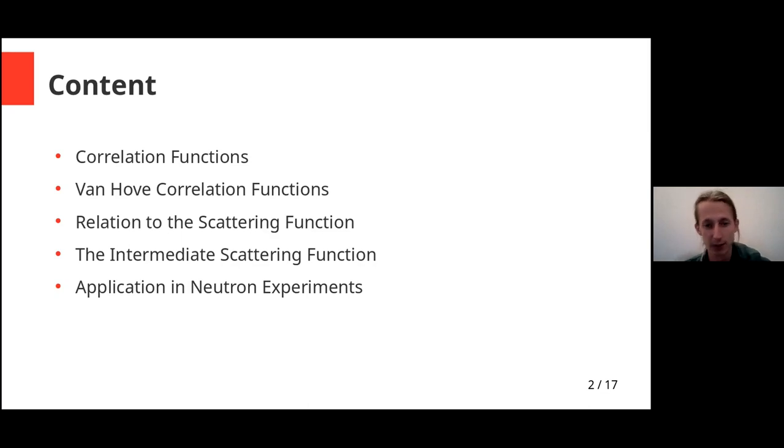Then how this relates to scattering functions. There we see why we need this for scattering experiments, and then the intermediate scattering function is just a third function which is also related, and some applications to neutron experiments.